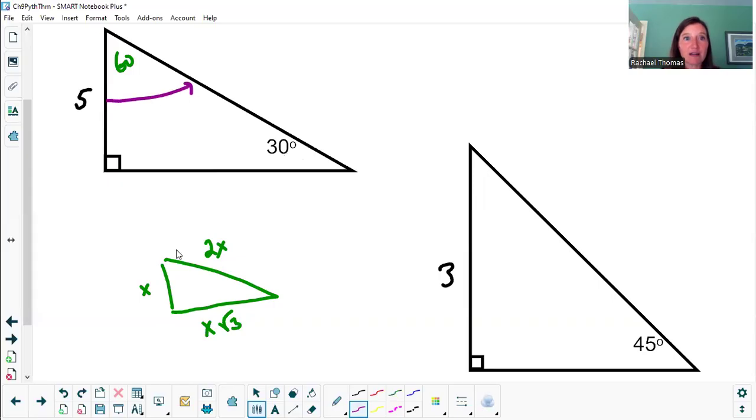5 is my short leg, which means the long side, the hypotenuse, will be 2 times 5 or 10. And this side over here, this longer leg, I leave that number alone, 5, but I attach to it a square root of 3. That's my final answer.